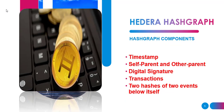Now the question is what are the components of Hedera Hashgraph. Hedera Hashgraph contains the following components as you can see on your screen: number one, a timestamp; number two, self parent and other parent; number three, digital signature; number four, transactions; and two hashes of two events below itself. So any event must have two hashes, there must be transactions, a digital signature, self parent and other parent information, and the timestamp recording how long it takes to complete that transaction.